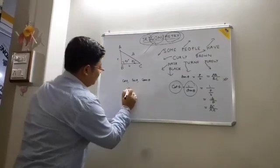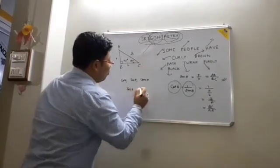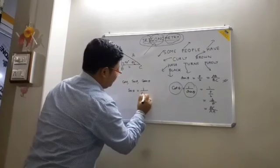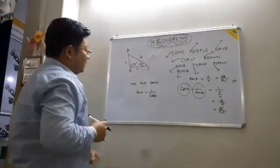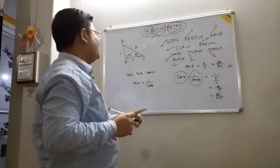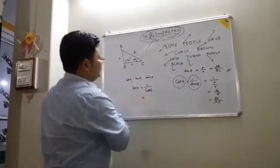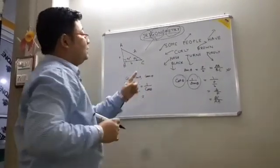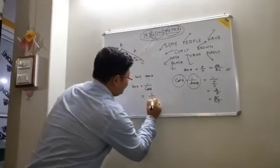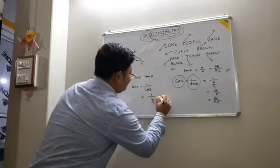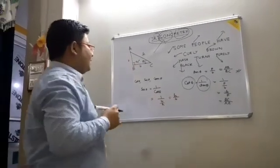What about sec theta? Sec theta equals 1 by cos theta — it is the reciprocal of cosine of that angle. Cos theta is B by H, so sec theta equals 1 divided by (B/H), which gives H by B.